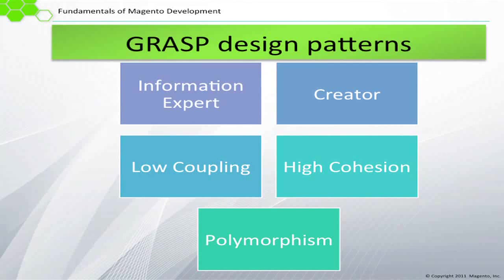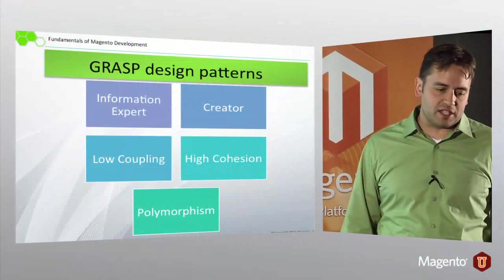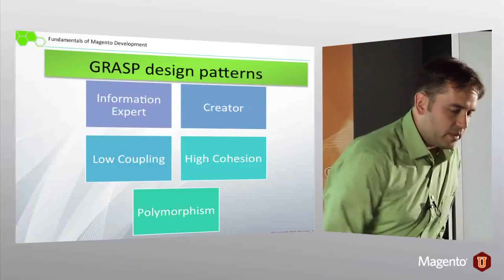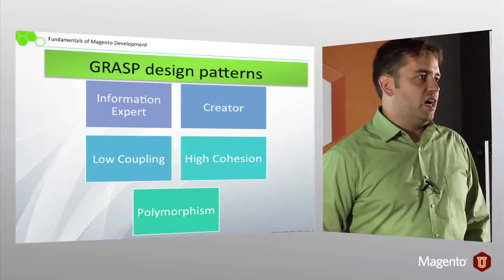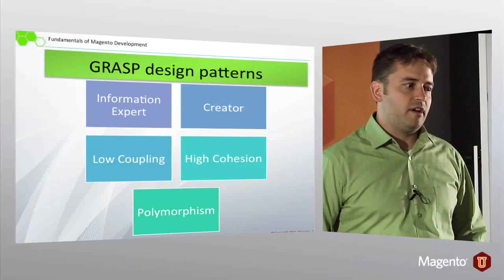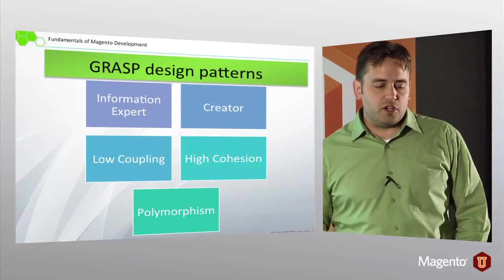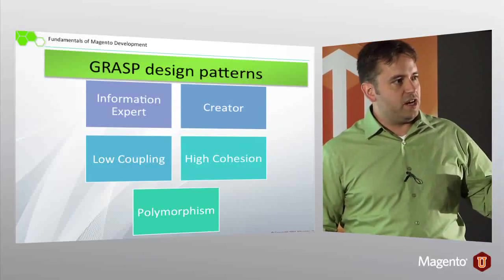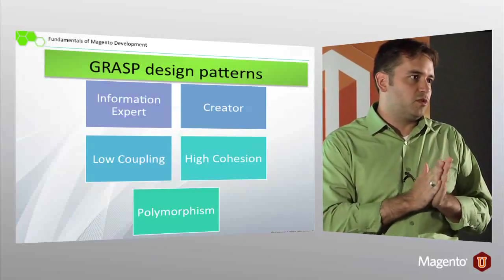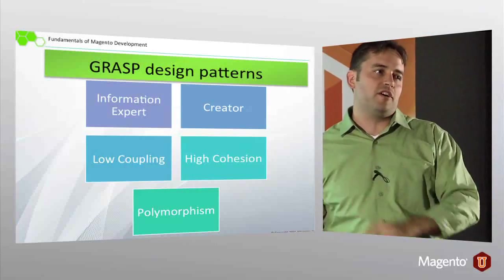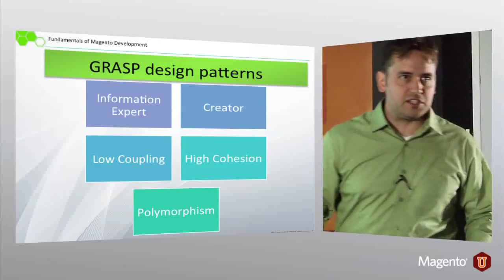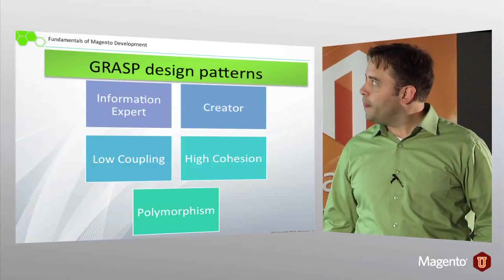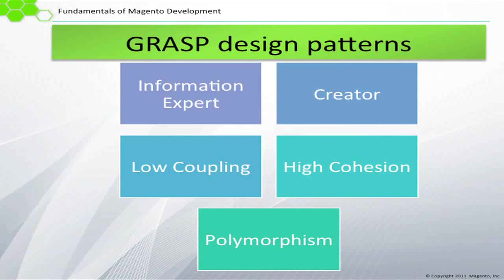Similarly, the GRASP design patterns — you can wiki this and learn all about it. These concepts are handy to know because they can help you as you go to design your own modules and craft solutions. It's good to pause and think: if I do this here, how am I going to build a nice interface? Or does this class know too much about another class? This is the scope of the GRASP pattern and how Magento tries to solve it — and how Magento 2 will solve it very well.